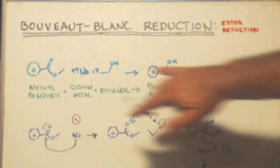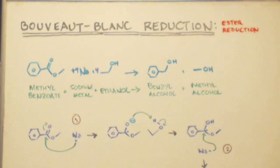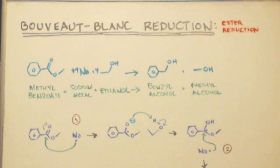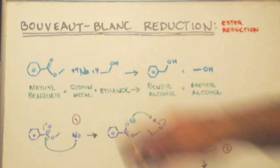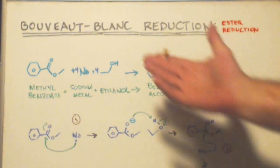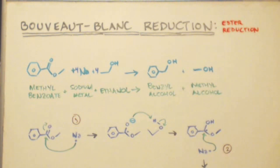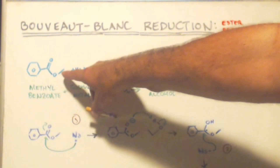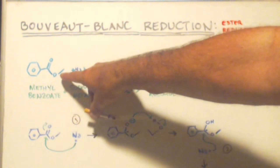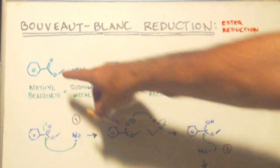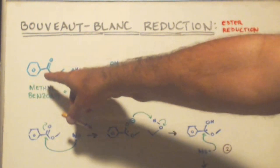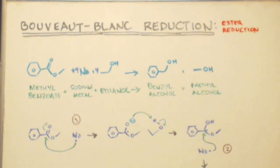Here is the formula for it: methylbenzoate, four moles of sodium, and four molecules of ethanol. Then this will break apart - this is a methyl group so you get methanol, this is a benzo group so you get benzyl alcohol.